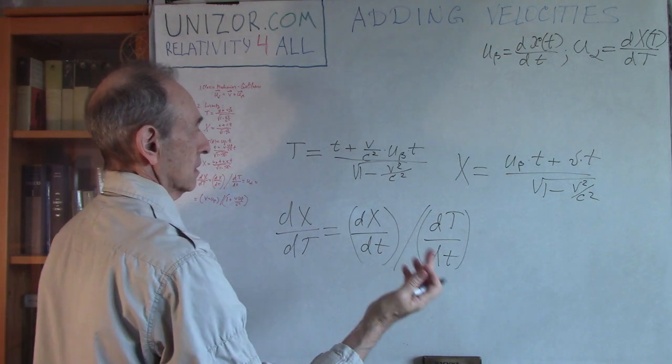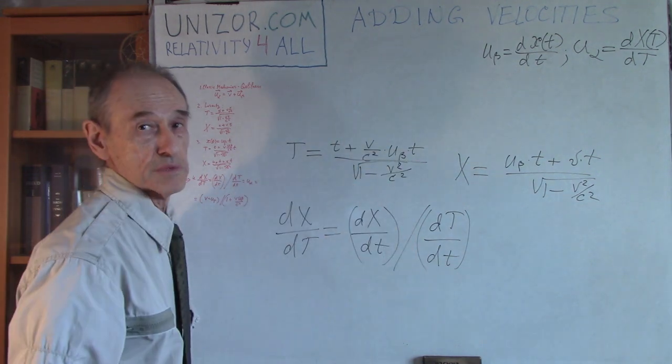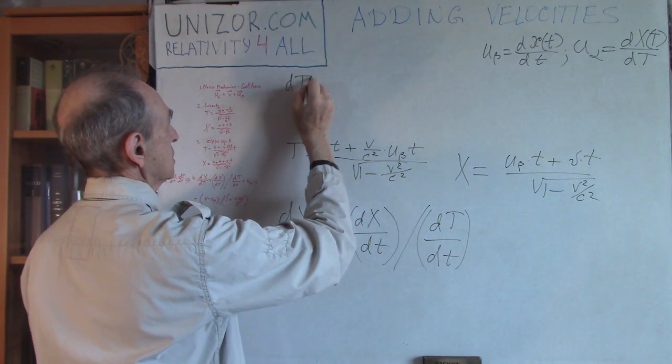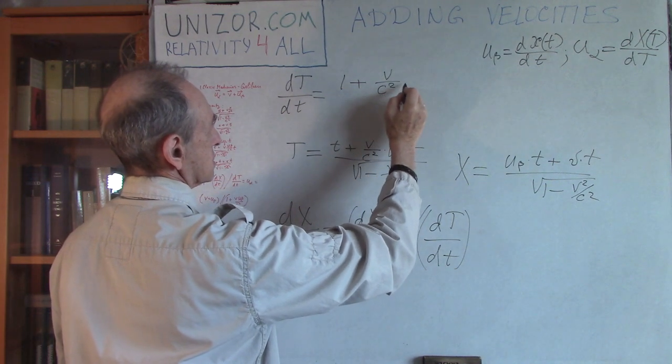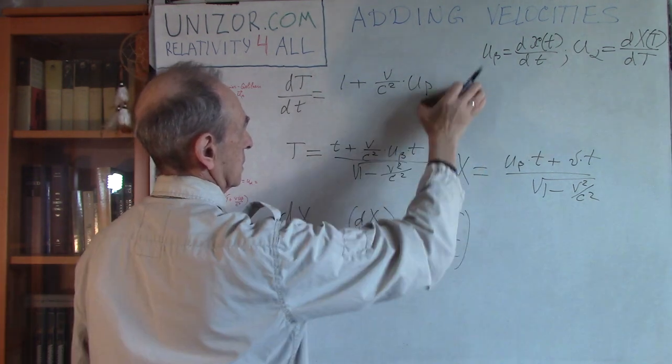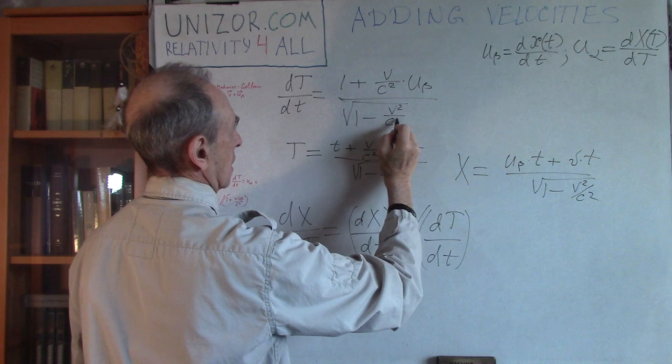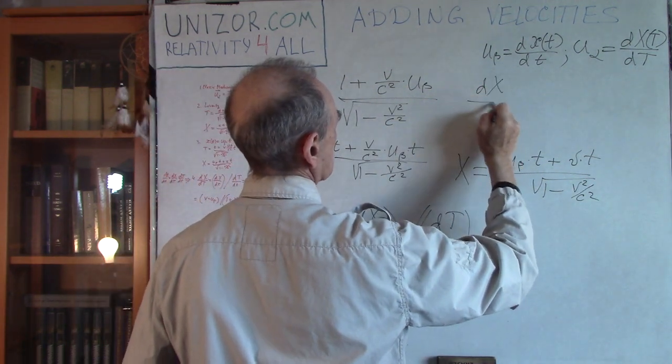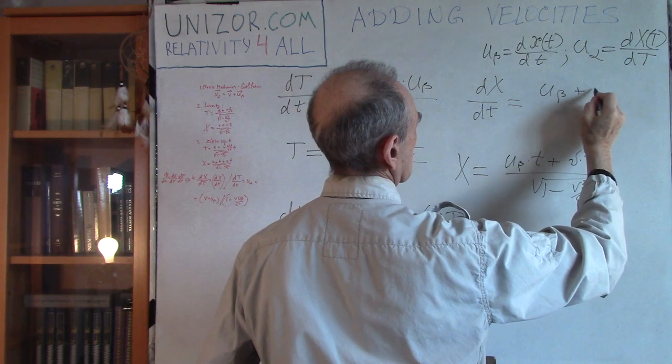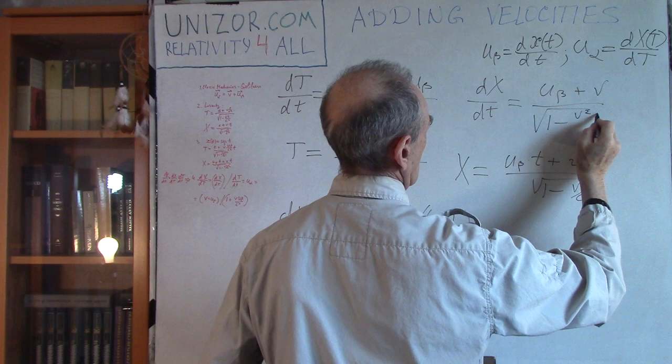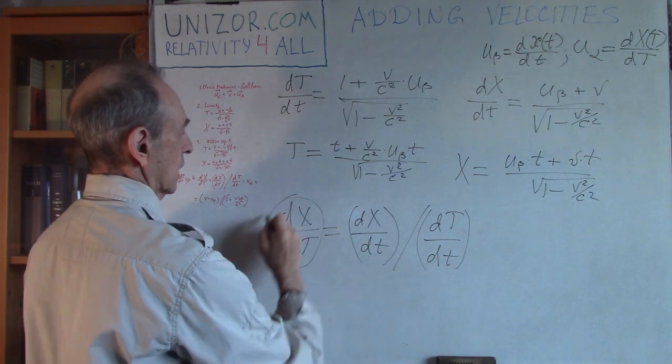There is nothing actually complicated. You just factor out t and whatever remains would be the multiplier which is the derivative. dT/dt is equal to (1 + v/c² times u_beta) divided by square root. And dX/dt is, again, t factors out, whatever remains is (u_beta + v) divided by square root. All we have to do is divide one by another to get the speed.